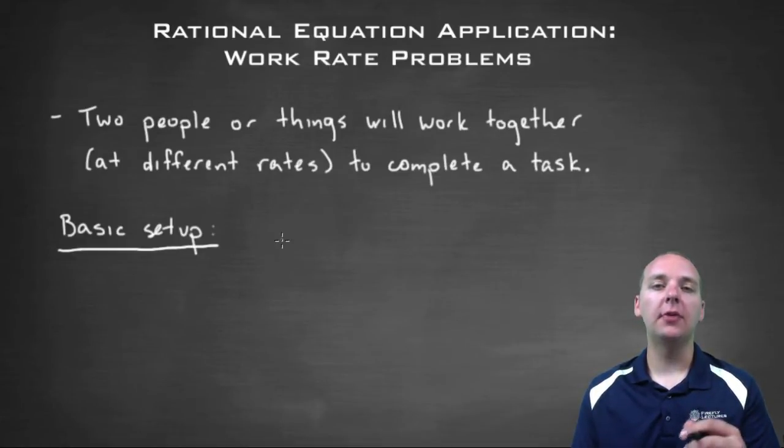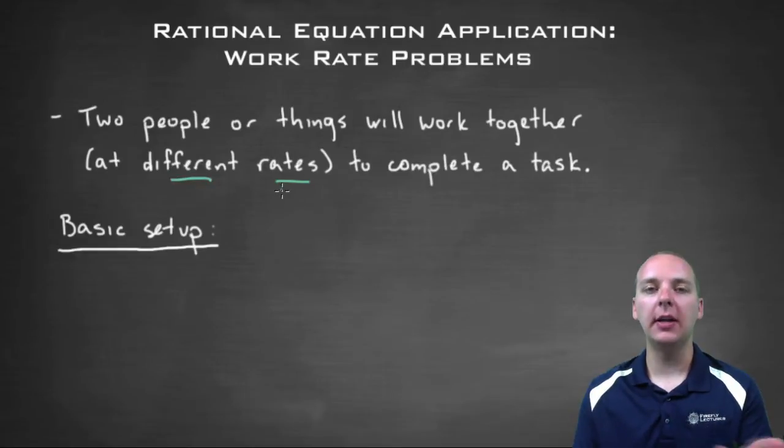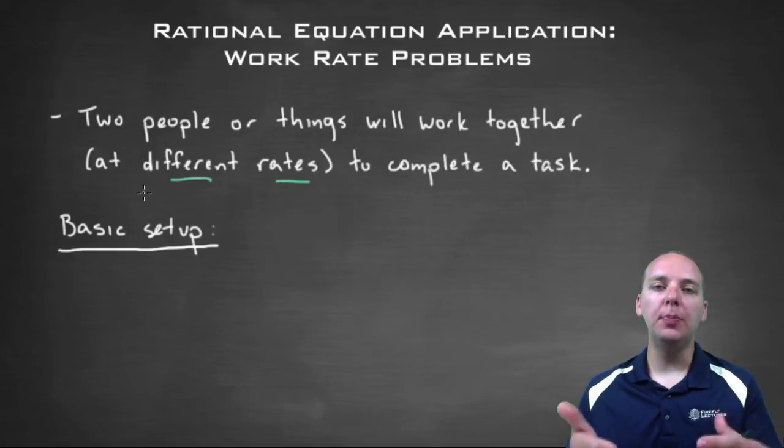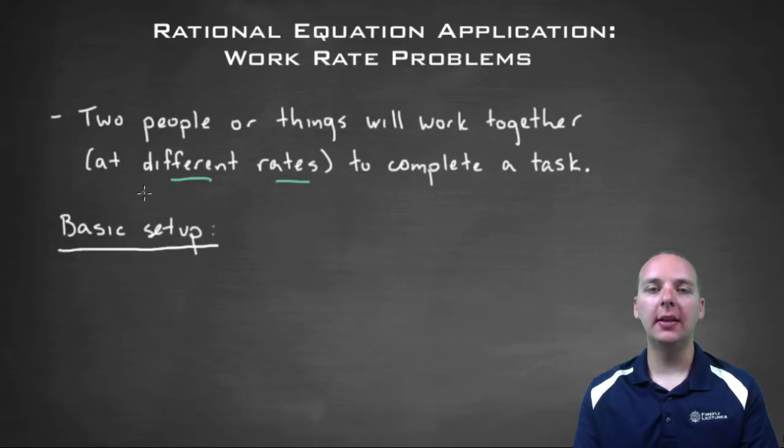And in fact, usually we have two people or items that can complete these tasks, usually at different rates. Usually somebody can do the task faster or slower than another person. And then the question simply asks, if these two people or things work together to complete the task, how long would it take them to do it? And these are much more challenging than you might think.